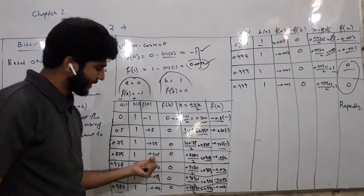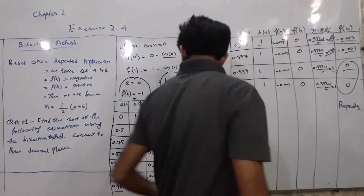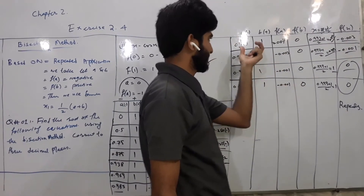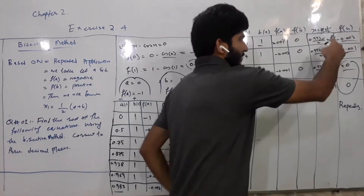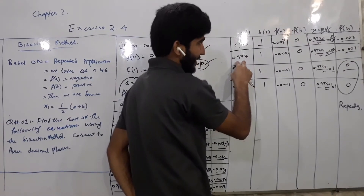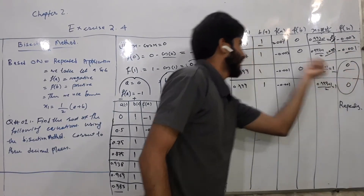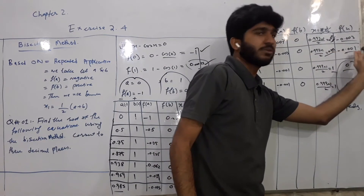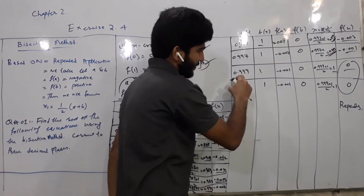اسی طریقے سے یہ process سارا چلیں گے. آگے آ کر ہمارے پاس a = 0.993 اور b = 1 ہے. ان دونوں کو plus کر کے divide کریں گے، جو value آئے گا function میں put کریں گے. 0.997 آیا تو ہم نے یہاں رکھا. Function کا value minus 0.003 آیا. پھر (0.997 + 1) / 2 = 0.999 آ رہا ہے. جب 0.999 function میں put کیا تو minus 0.001 آیا.